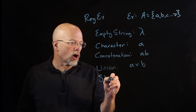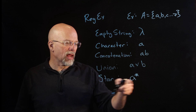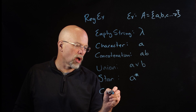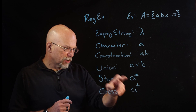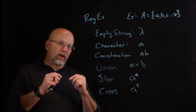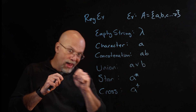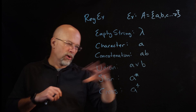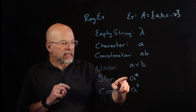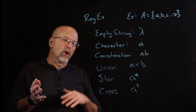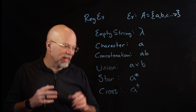We also had concatenation — putting two letters together with no space, in sequence. Then we had union, using the 'or' symbol: a or b means the expression is satisfied by just a or just b, but not both and not any other letter. Then we had star — a little asterisk — meaning zero or more repetitions: no a's, one a, two a's, and so on. The plus or cross was the same but required at least one: one a, two a's, three a's, and so on.